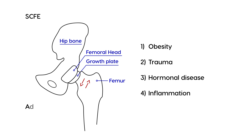It happens mostly in early adolescence and it affects boys a lot more than girls. They feel that the weakening of this growth plate — which I'm coloring in red here — is really at the heart of why this femoral bone displaces upward and then forward.